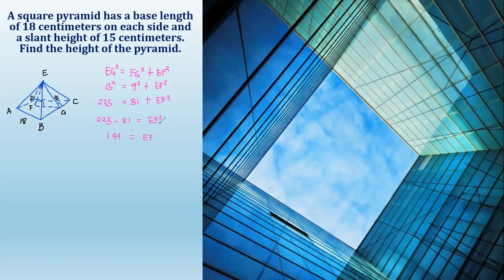This equals EF squared. So for this 144, you need to take the square root. Square root of 144 is equal to 12. So the height of this square pyramid is 12 cm.